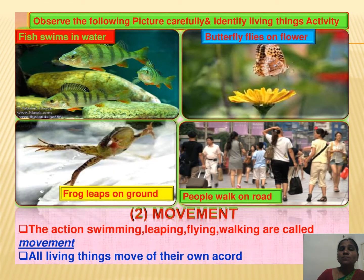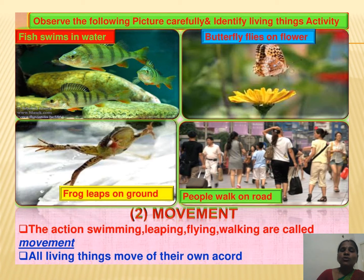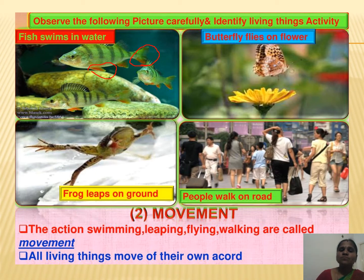Let's observe the following pictures carefully. Fish swims in water with the help of fins and tails — this is the fin and this is the tail. With the help of these two organs, fish can swim in water. Butterflies fly onto flowers with the help of their wings.